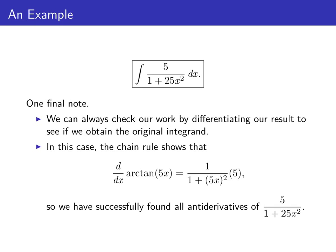So in this case, we would differentiate our result, arctangent of 5 x. And because we have a composite, we'd use the chain rule. Differentiating the arctangent gives us 1 over 1 plus the square of what's inside. So we get 1 over 1 plus 5 x squared. Then we have to multiply by the derivative of what's inside. That's 5.